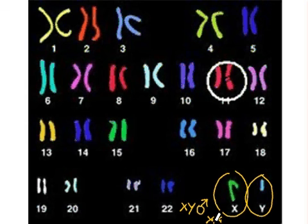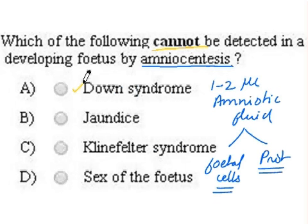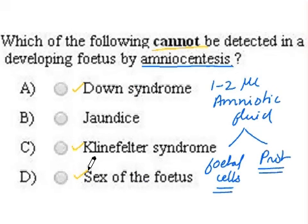The question asks what cannot be detected. Down syndrome, that is trisomy of the 21st, can be detected by viewing the karyotype. Klinefelter syndrome, that is X, X, Y, can also be detected, as can the sex of the fetus — X, X or X, Y. The only condition which cannot be detected from this is jaundice. So the correct answer would be option B.